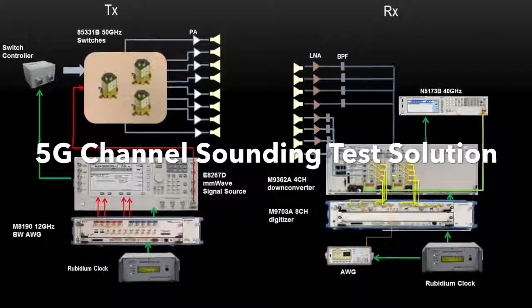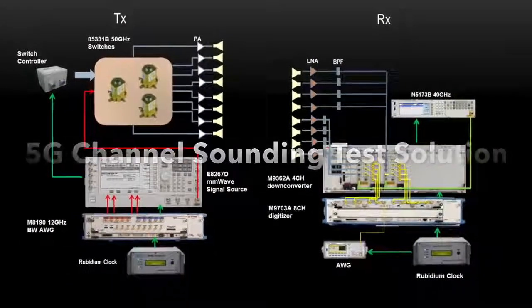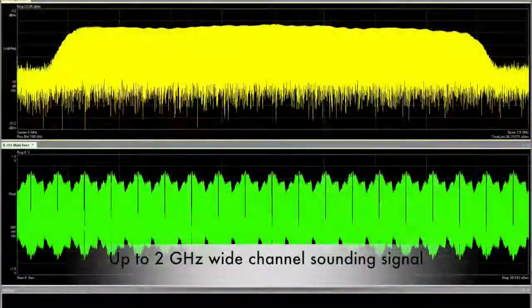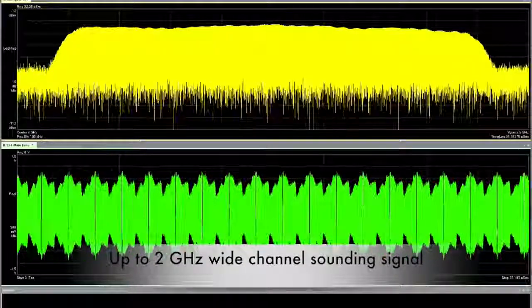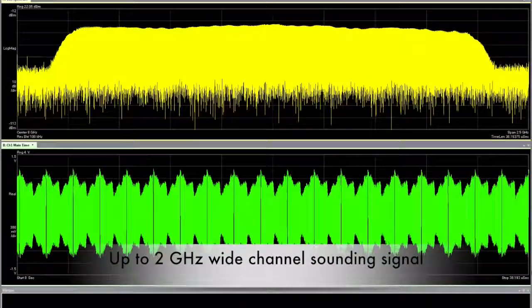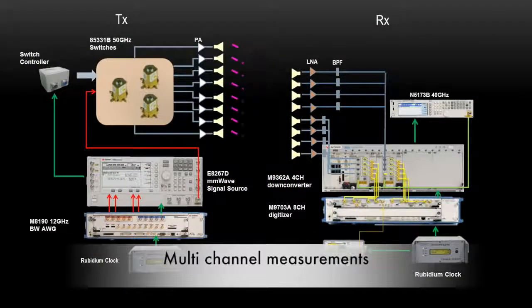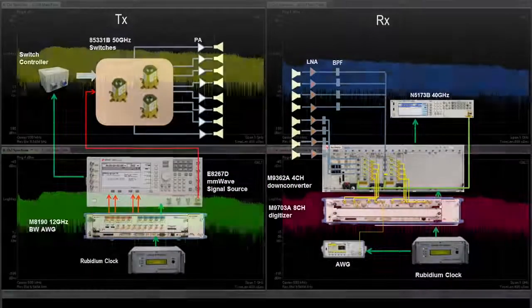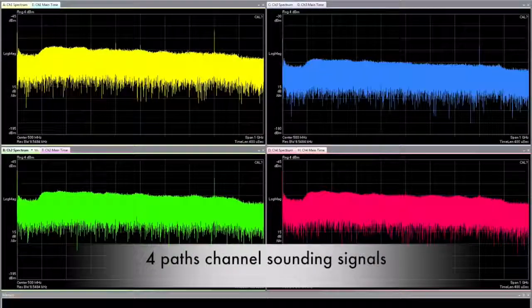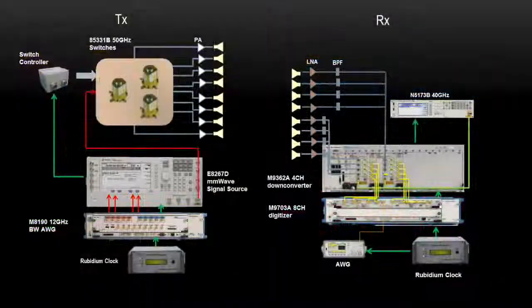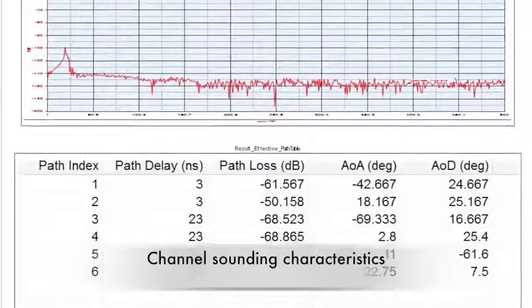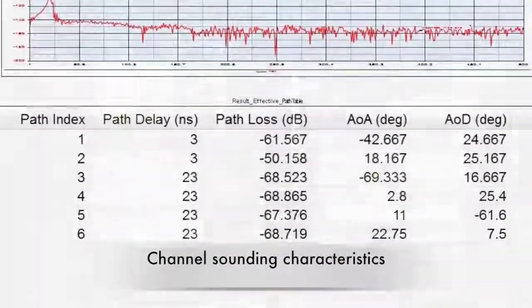5G channel sounding test solution from Keysight helps you generate up to 2 GHz wide stimulus signals at millimeter wave frequencies, transmit the signal to your antenna array for multi-channel measurements, capture the transmitted and reflecting millimeter wave sounding signals, and finally, extract the most insightful channel characteristics.